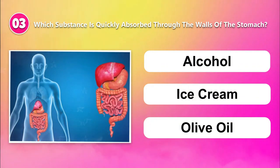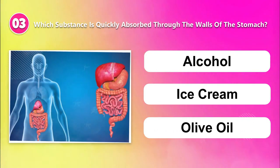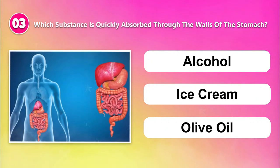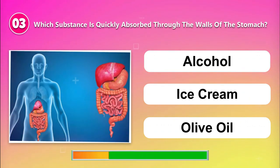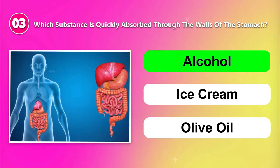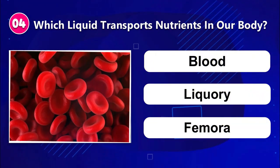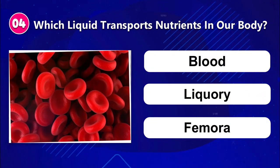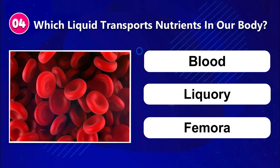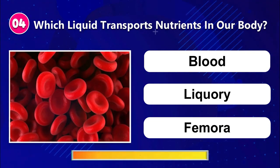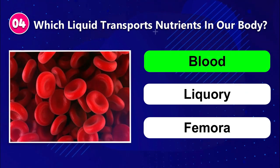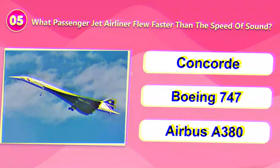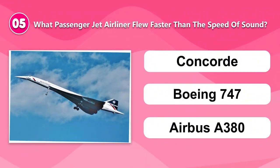Number three: Which substance is quickly absorbed through the walls of the stomach? Alcohol, ice cream, or olive oil. Number four: Which liquid transports nutrients in our body? Blood, licorice, or femora.